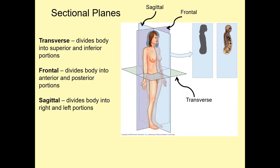Next, we have sectional planes. The first is the transverse sectional plane, which is a horizontal plane that divides superior to inferior. Then we have a frontal plane, which divides anterior and posterior. And then we have the sagittal plane, which divides left and right.